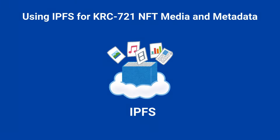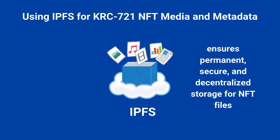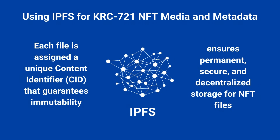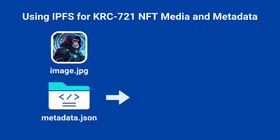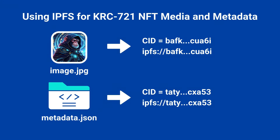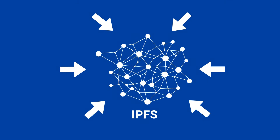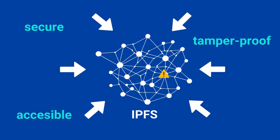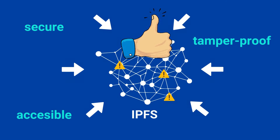IPFS, or the Interplanetary File System, is a decentralized storage protocol designed to make the web more permanent and secure. Unlike centralized servers, IPFS uses a distributed network of nodes to store and share files. Each file on IPFS is assigned a unique Content Identifier, or CID, which acts as a digital fingerprint. Once a file is added to IPFS, it becomes immutable, meaning its content cannot be altered without generating a new CID. This immutability is crucial for NFTs. By storing your images and metadata on IPFS, you ensure they remain secure, accessible, and tamper-proof. Even if a hosting provider goes offline, your NFT data is safe as long as the CID exists in the IPFS network.